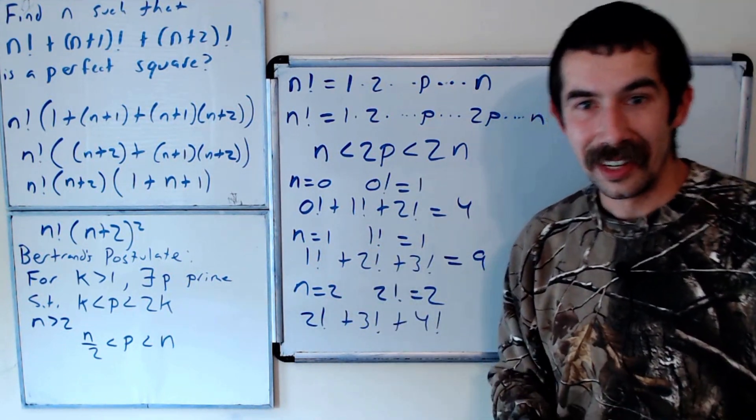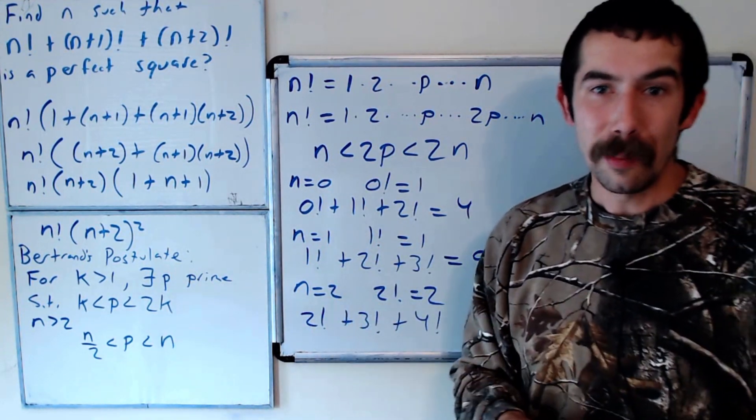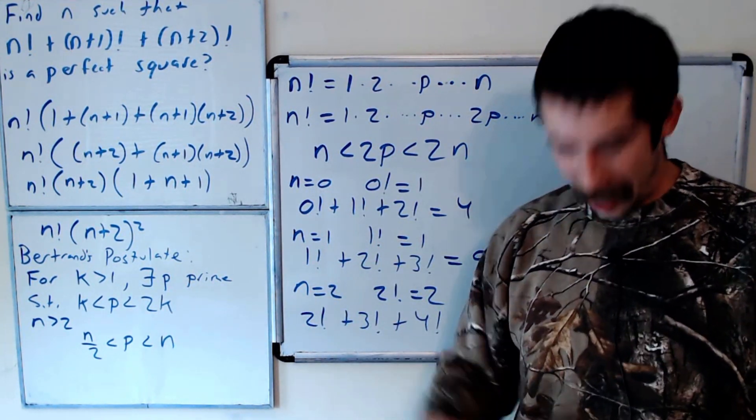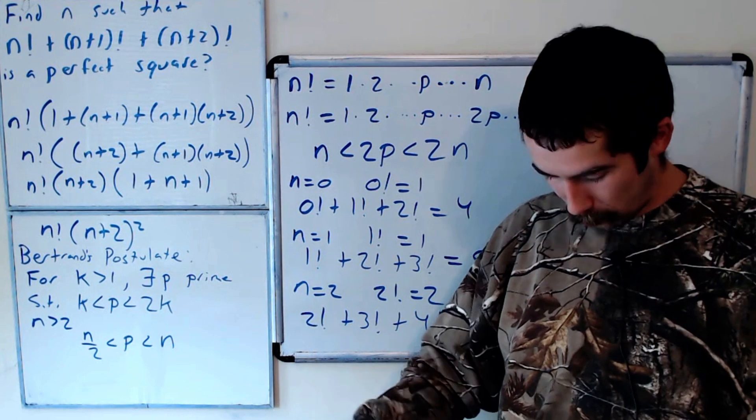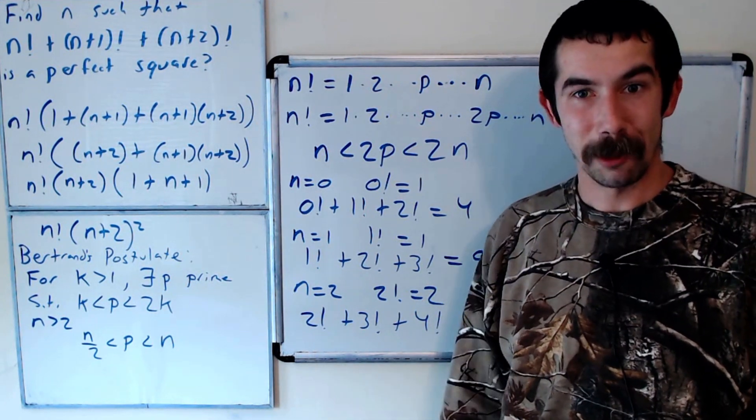So the only values where n! + (n+1)! + (n+2)! is a perfect square are n equals 0 and n equals 1. Pretty neat! Let me know what you think, and let me know what you think about my cool camouflage sweatshirt. See you later.